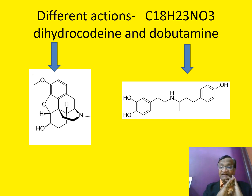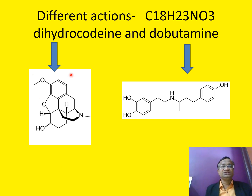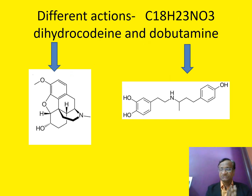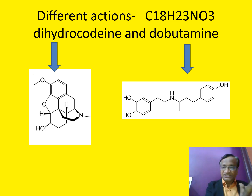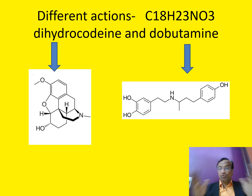Sometimes structural isomers can have completely different actions. For example, one is dihydrocodeine and another is dobutamine. We have now seen structural isomerism with both same action and different actions.